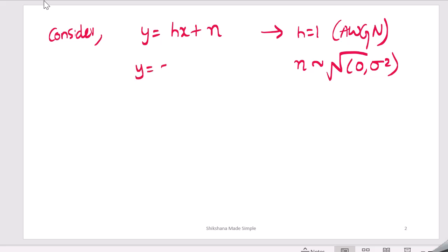So finally we will get y = x + n, where x is your transmitted signal or transmitted bit, y is your received signal, and n is noise.